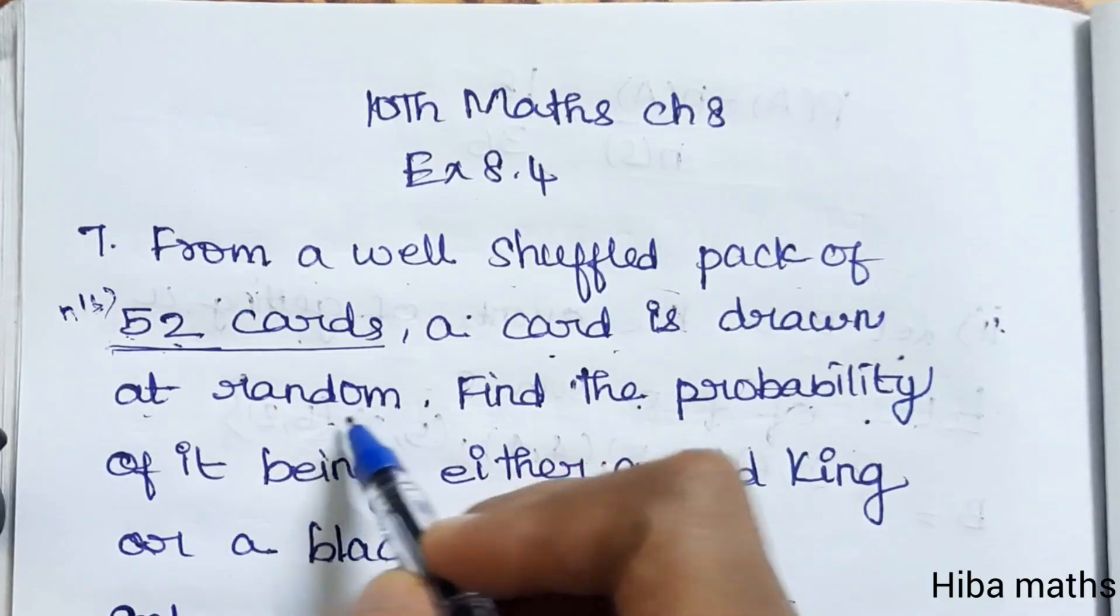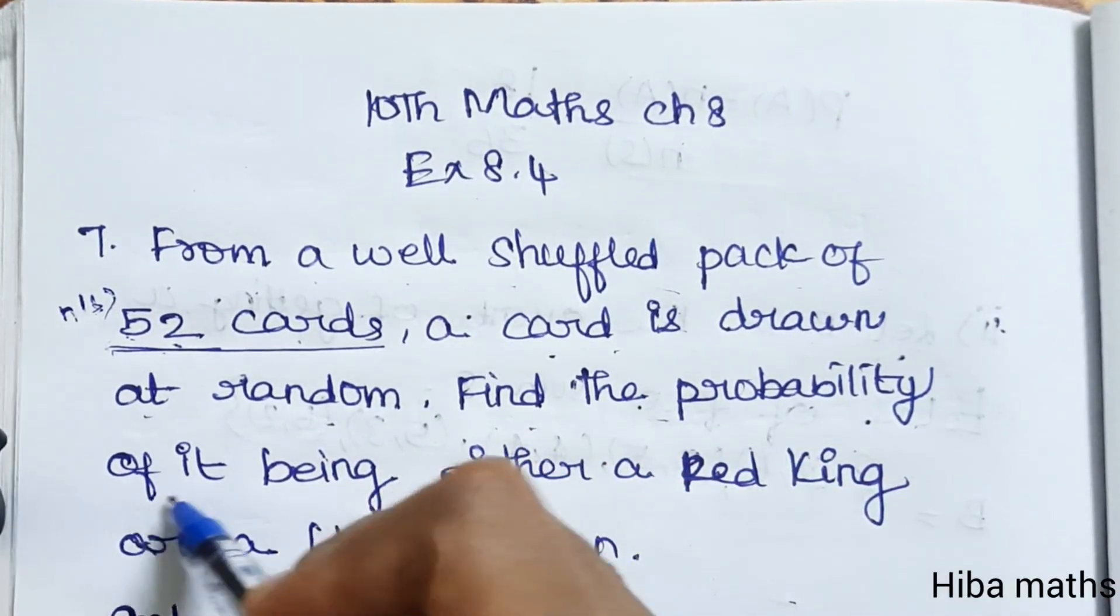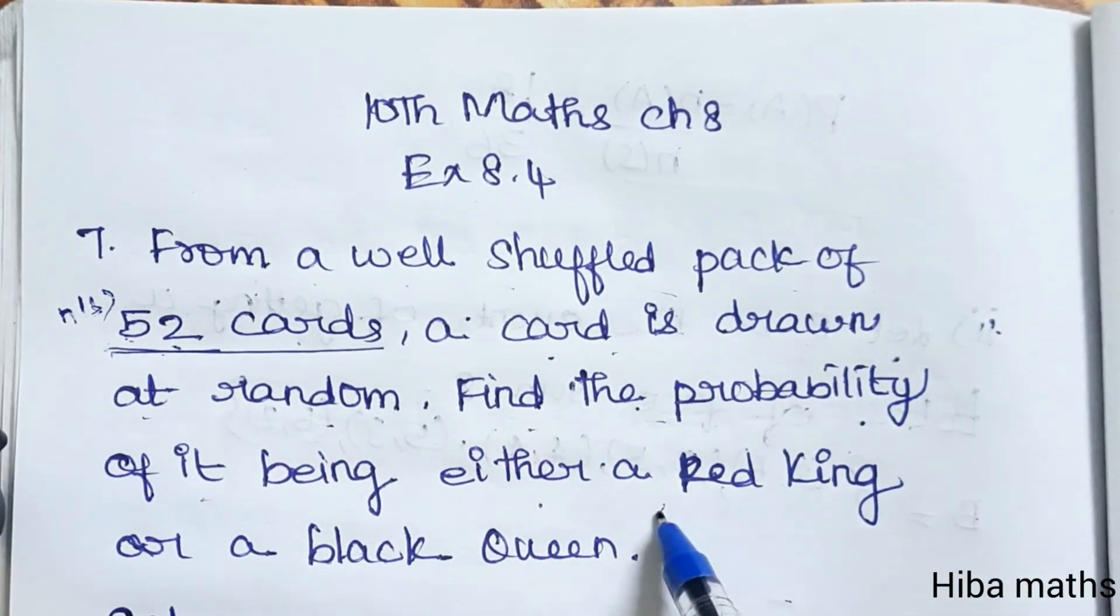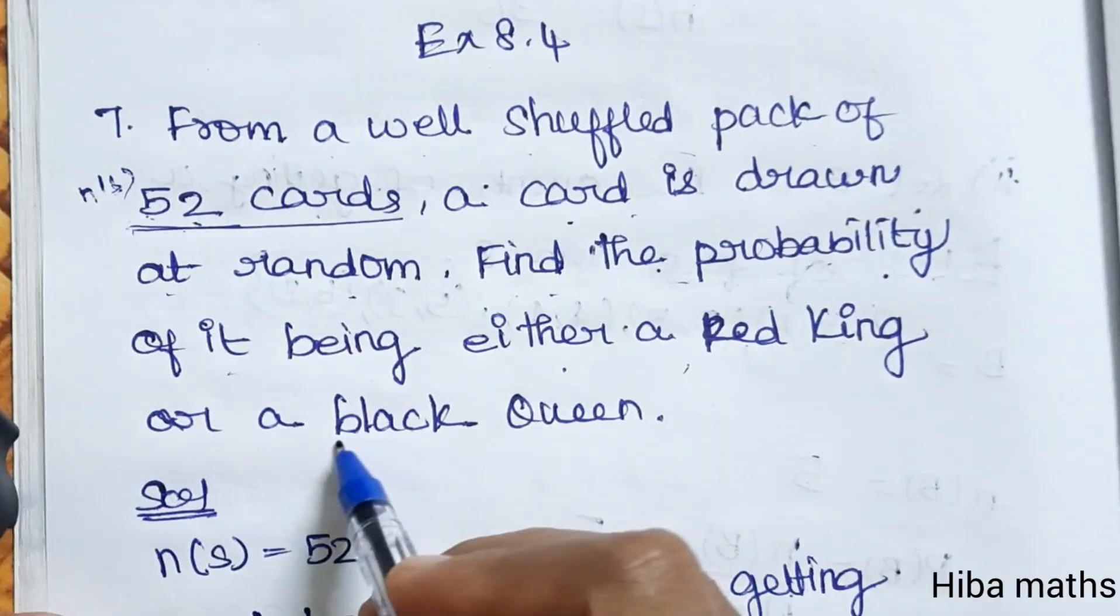A card is drawn at random. Find the probability of it being either a red king or black queen.